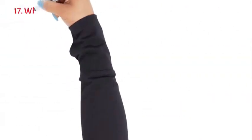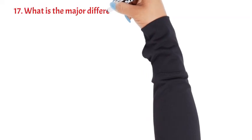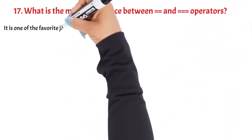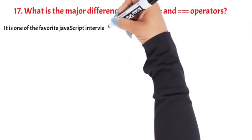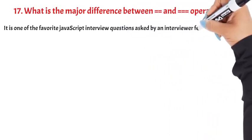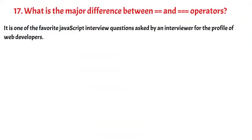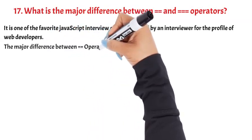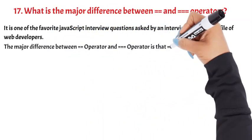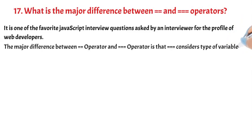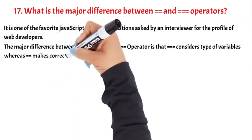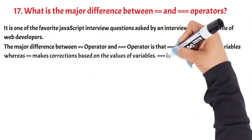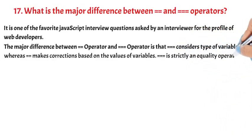Question 17: What is the major difference between the == and === operators? The major difference is that === considers the type of variables, whereas == makes comparisons based only on the values of variables. The === operator is the strict equality operator.